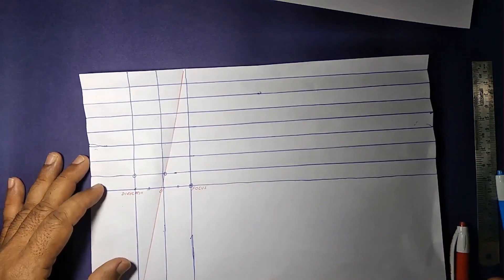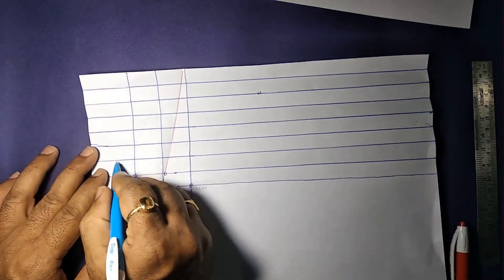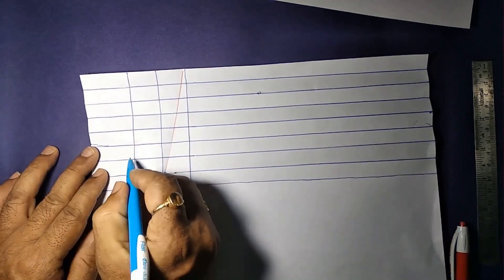We are interested in only one point where this horizontal line is intersecting this new line. This is the point. We have marked that. And this line or this point lies on the parabola.